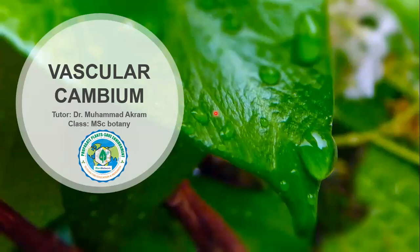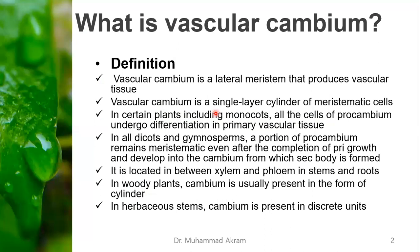Vascular cambium. What is vascular cambium? Vascular cambium is a lateral meristem that produces vascular tissues. Vascular cambium is a single layer of slender meristematic cells.